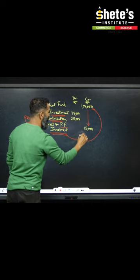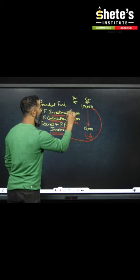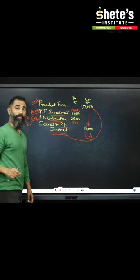So these two - these two will go to the liabilities side of the P.F. Investment and balance sheet side will go to the asset side. I hope it helps.